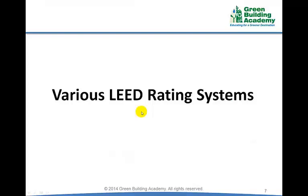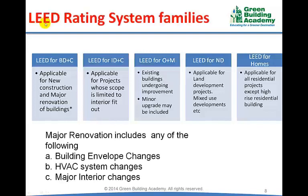There are various rating systems within LEED for different building typologies. There are five families of LEED rating systems: LEED for BD+C (Building Design and Construction), LEED for ID+C (Interior Design and Construction), LEED for O+M (Operation and Maintenance), LEED for ND (Neighborhood Development), and LEED for Homes.